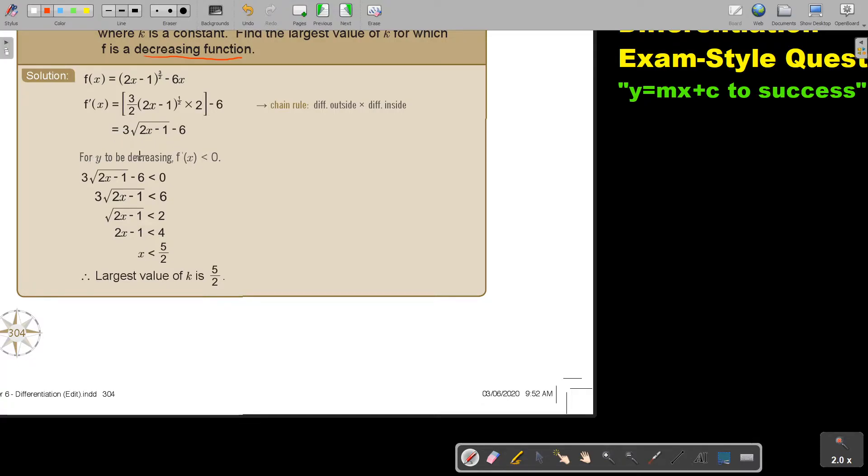Now for y to be a decreasing function, this derivative function must be smaller than zero. So I divide 3, divide 3, I square both sides, and I get x is smaller than 5 over 2. So the largest value of k is 5 over 2.